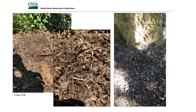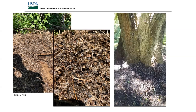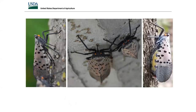SLF — both nymphs and adults — feed using a proboscis, a feeding tube. They are phloem feeders: no biting, chewing, or boring. The insect is completely external throughout its life stages from eggs to adults. The image shows a female (identifiable by the red valve structure below, absent in males). They use lenticels on tree bark to feed, inserting the proboscis into the phloem.